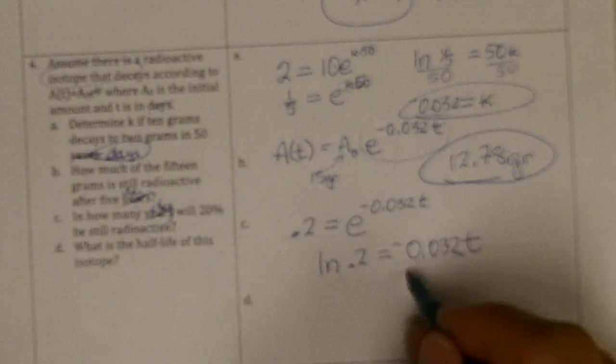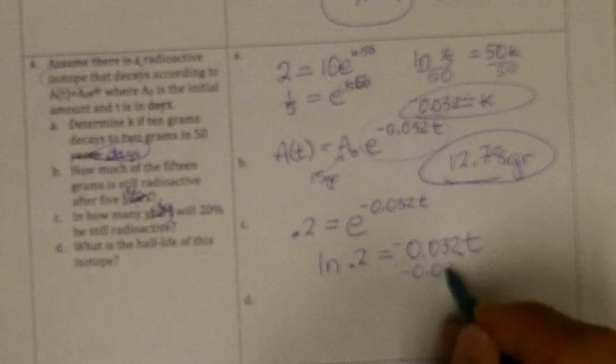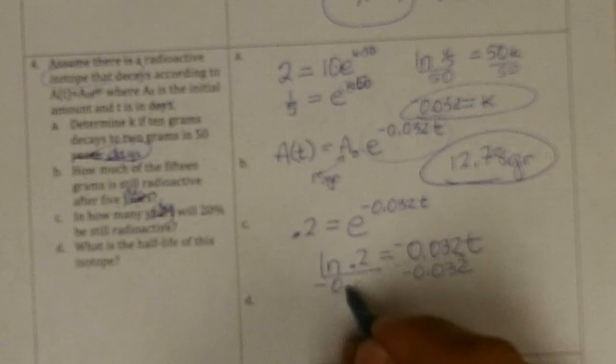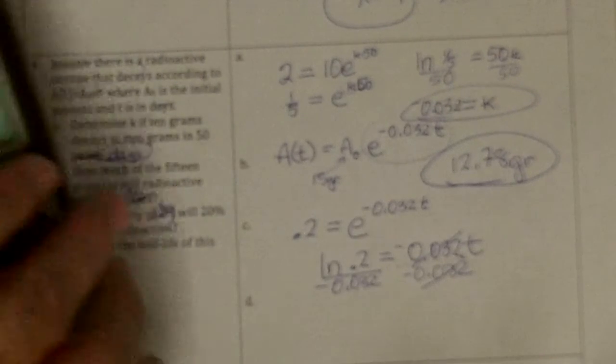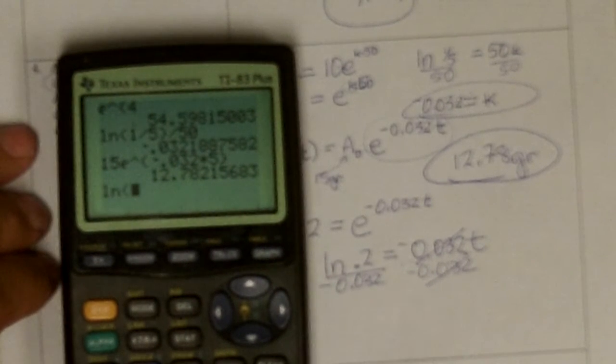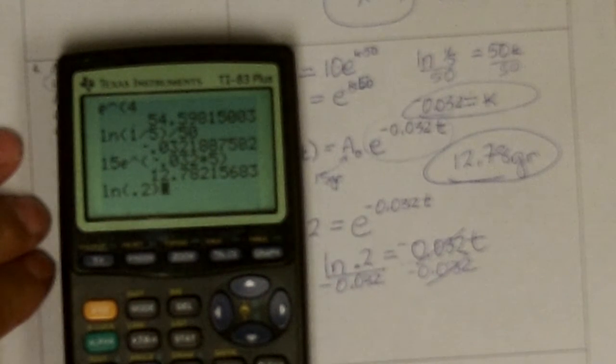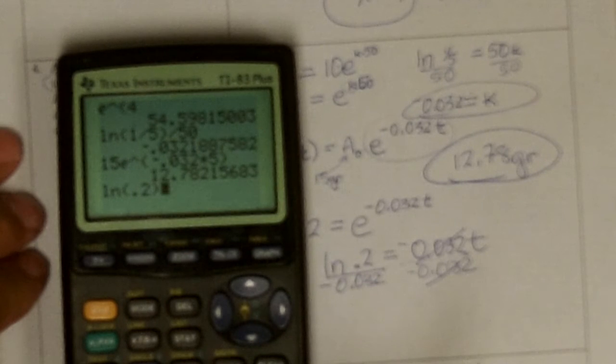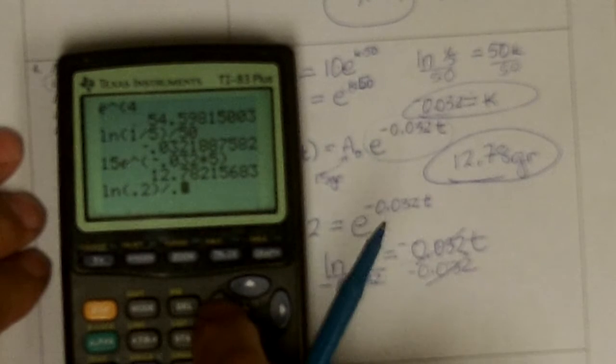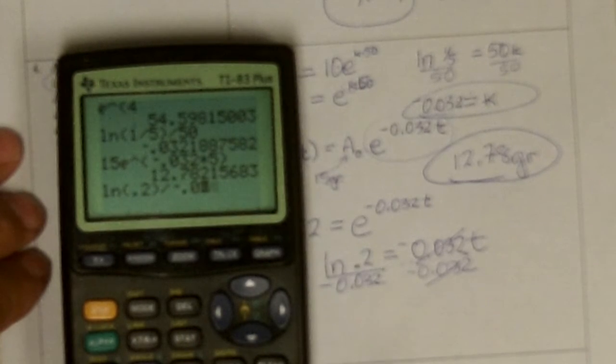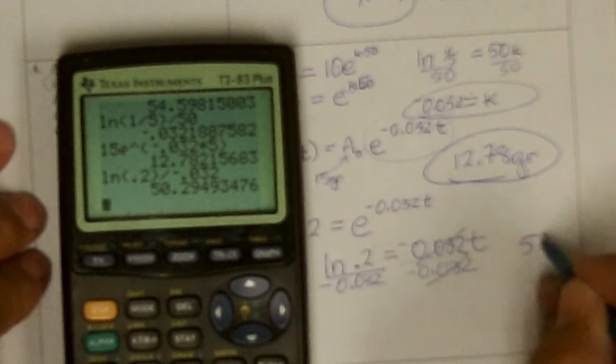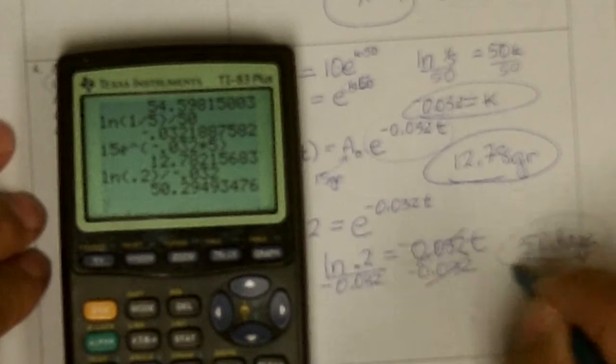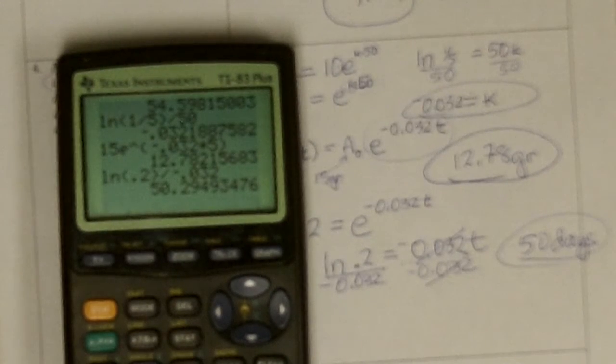So I divide by negative 0.032. And I get t to be ln 0.2, close parenthesis, divided by negative 0.032. And I get approximately 50 days. Or 50 years if we change them all to years, whichever.